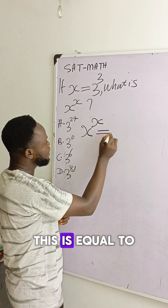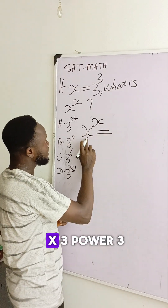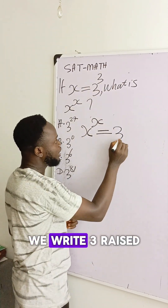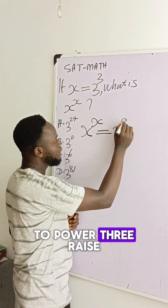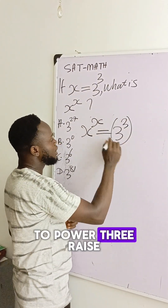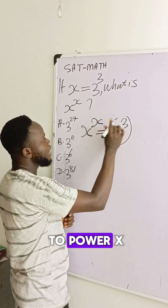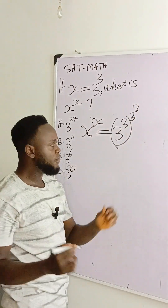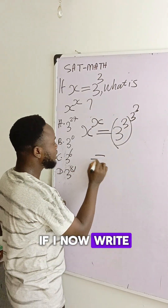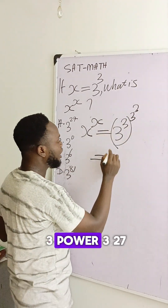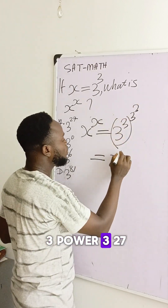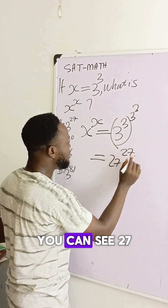This is equal to x = 3 power 3. We write 3 raised to the power 3, raised to the power x — that is 3 raised to the power 3. If I now write 3 power 3, that is 27.